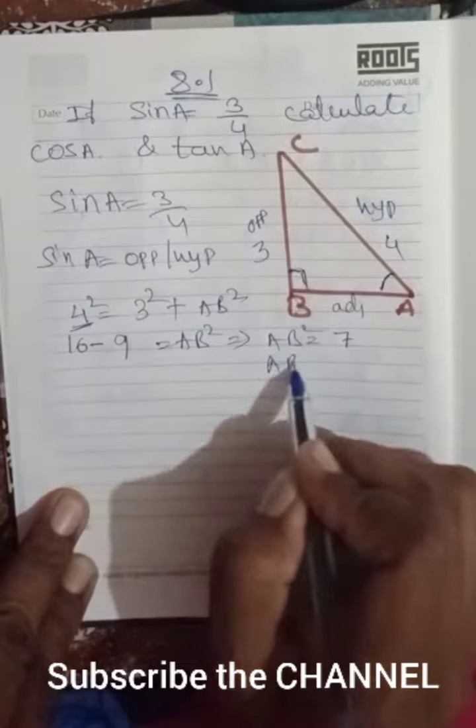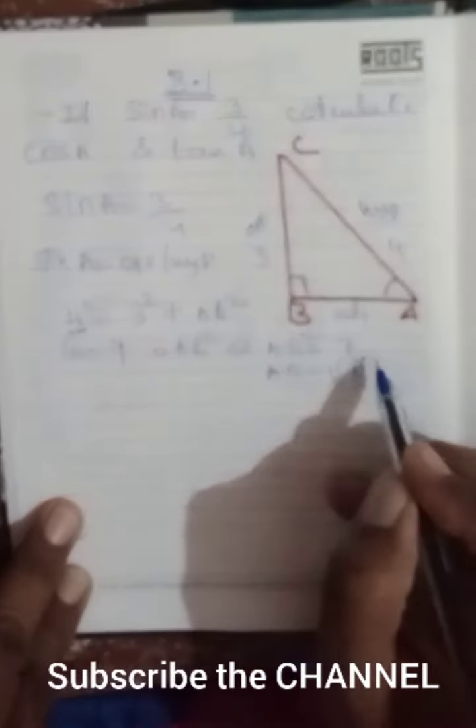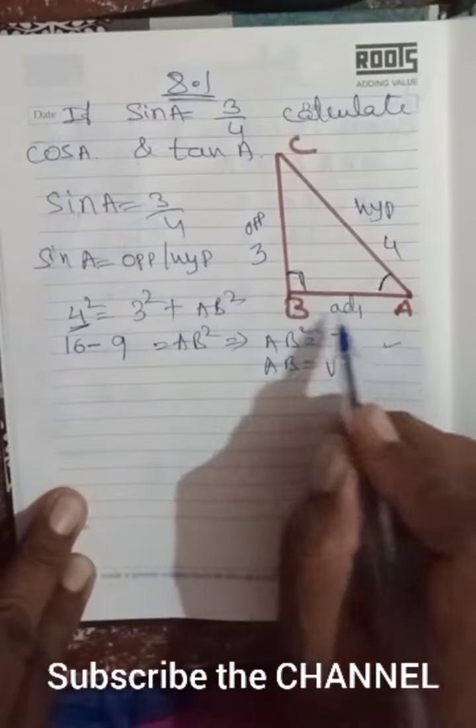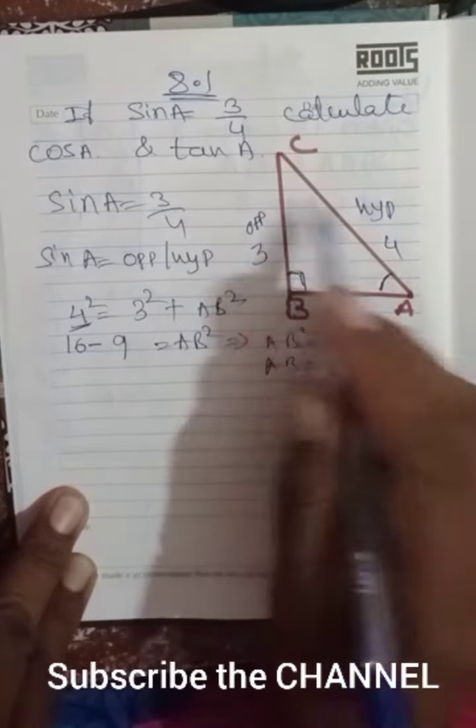This implies AB squared equals 7, so AB equals root 7. We're neglecting the minus sign because distance cannot be negative. Once you've got all the sides, you can very easily find the values of the remaining ratios.